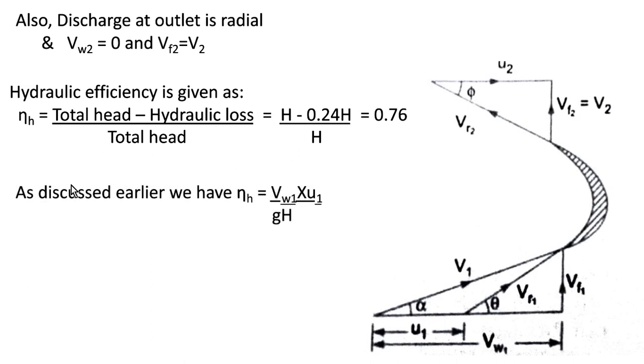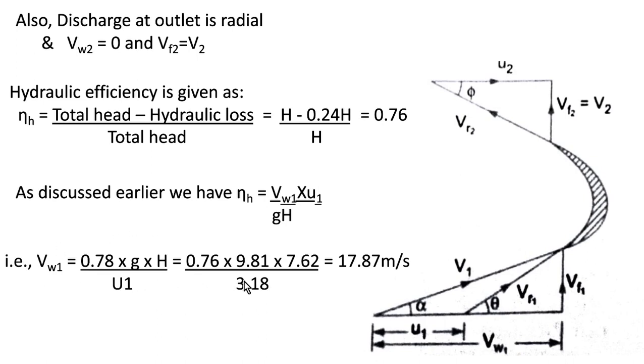As studied in previous classes, we know the formula connecting ηh and vw₁ and u₁, which is ηh = (vw₁ × u₁)/(g × h). Since we have found the value of ηh and we know the values of u₁ and h, we can substitute and solve for vw₁ to be 17.87 meters per second.